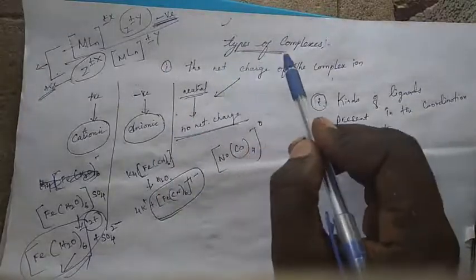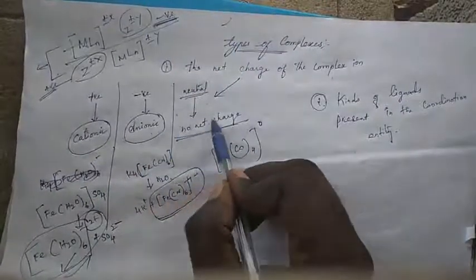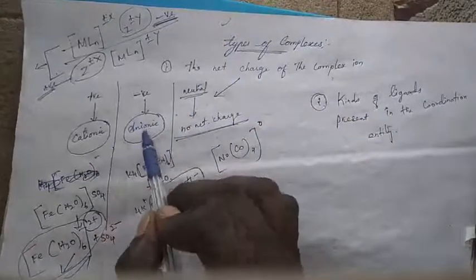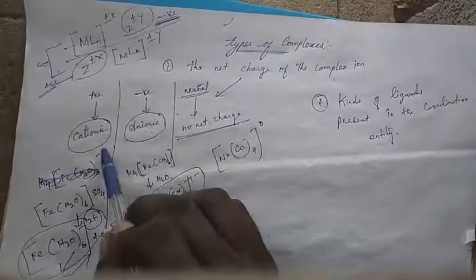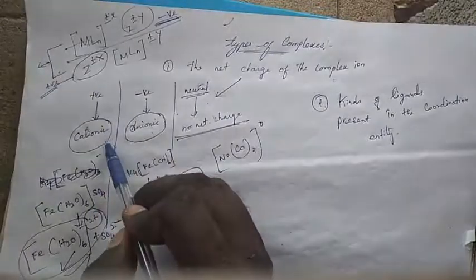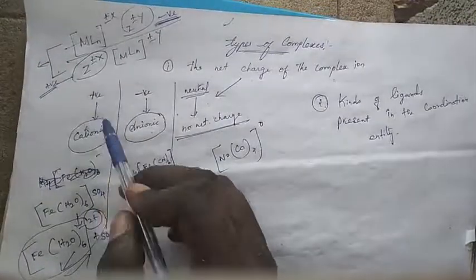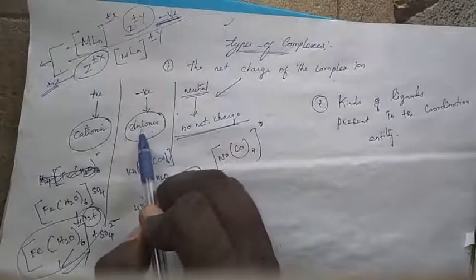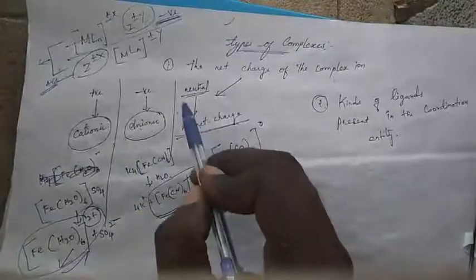Complexes are three types: cationic, anionic, and no net charge — neutral complex. Cationic complex means net charge is positive. Anionic complex means net charge is negative. No net charge means it is a neutral complex.